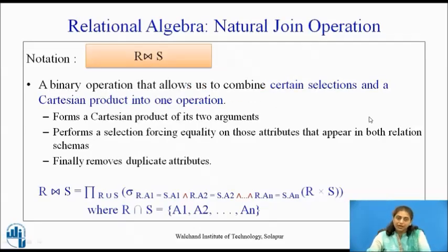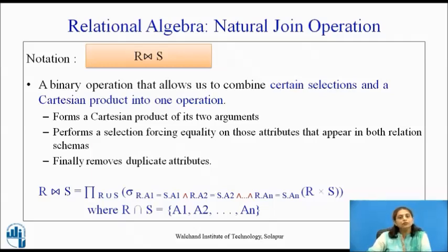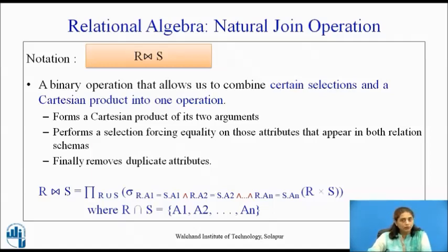We will start with natural join. When we want to combine selections and Cartesian product into one operation, we use natural join. The steps are: first, form a Cartesian product of the two relations; then perform a selection based on attributes which are common in both relations; and finally remove duplicates.